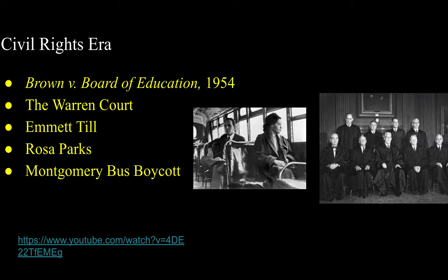Throughout Dwight Eisenhower's term, the civil rights issue grew and expanded very rapidly. Seen as the first major piece of momentum by many, the decision of the liberal-leaning Warren Court on Brown v. Board of Education officially desegregated public schools. The Warren Court, named for Chief Justice Earl Warren, would go on to make many landmark rulings, including Loving v. Virginia declaring interracial marriage constitutional, and Miranda v. Arizona in 1956, giving people their Miranda rights.